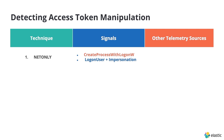For the net-only technique, the two key signals are CreateProcessWithLogon with the net-only flag, and the make-token gadget — a combination of LogonUser with a net-only flag followed by impersonating the returned token.